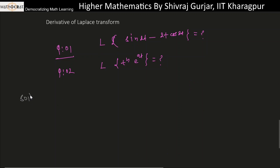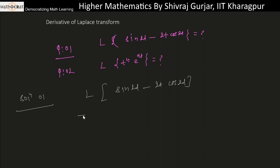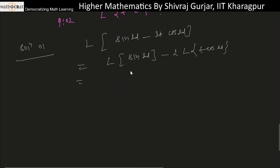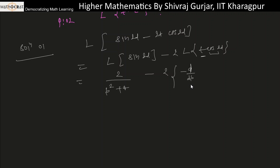Question 1: Find the Laplace of [sin(2t) minus 2t·cos(2t)]. By the linear property of Laplace transforms, we can write this as: Laplace of sin(2t) minus 2 times Laplace of t·cos(2t). Laplace of sin(2t) is 2 divided by (p²+4). For t·cos(2t), we use the derivative formula: minus d/dp of the Laplace of cos(2t), where G(p) is Laplace of cos(2t) equals p/(p²+4).